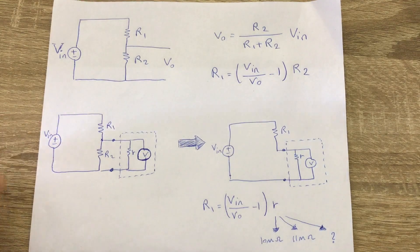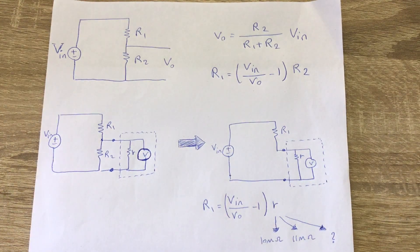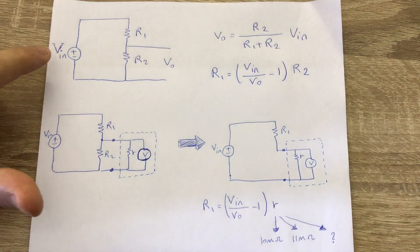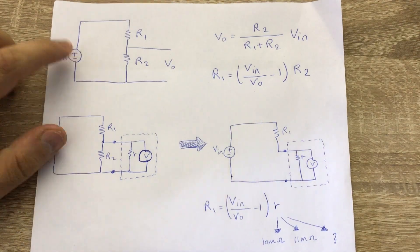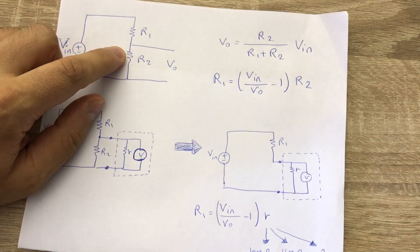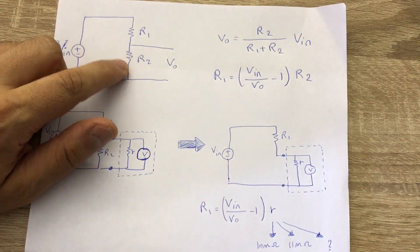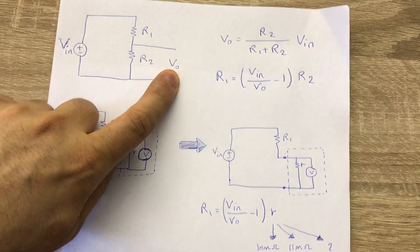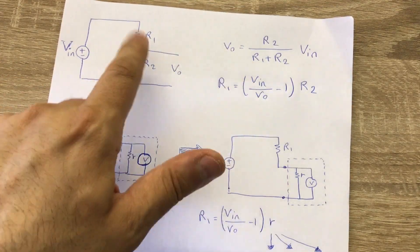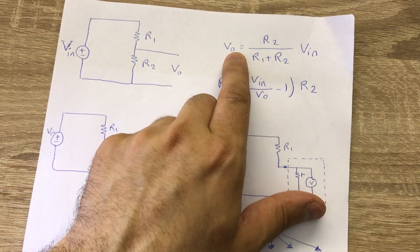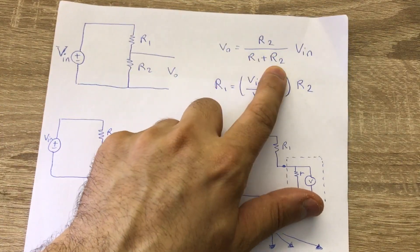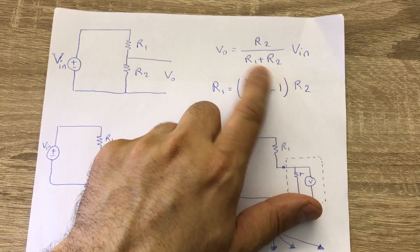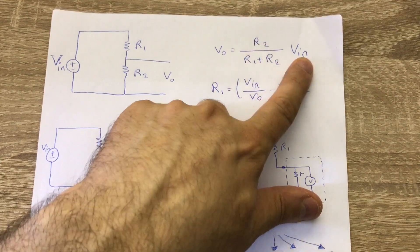The basic principle we are going to use is the voltage divider. We have a bench power supply providing input voltage, two resistors, and we measure the output voltage. Using simple Ohm's law, you can derive the relation: V_out equals R2 divided by (R1 + R2) times V_in.